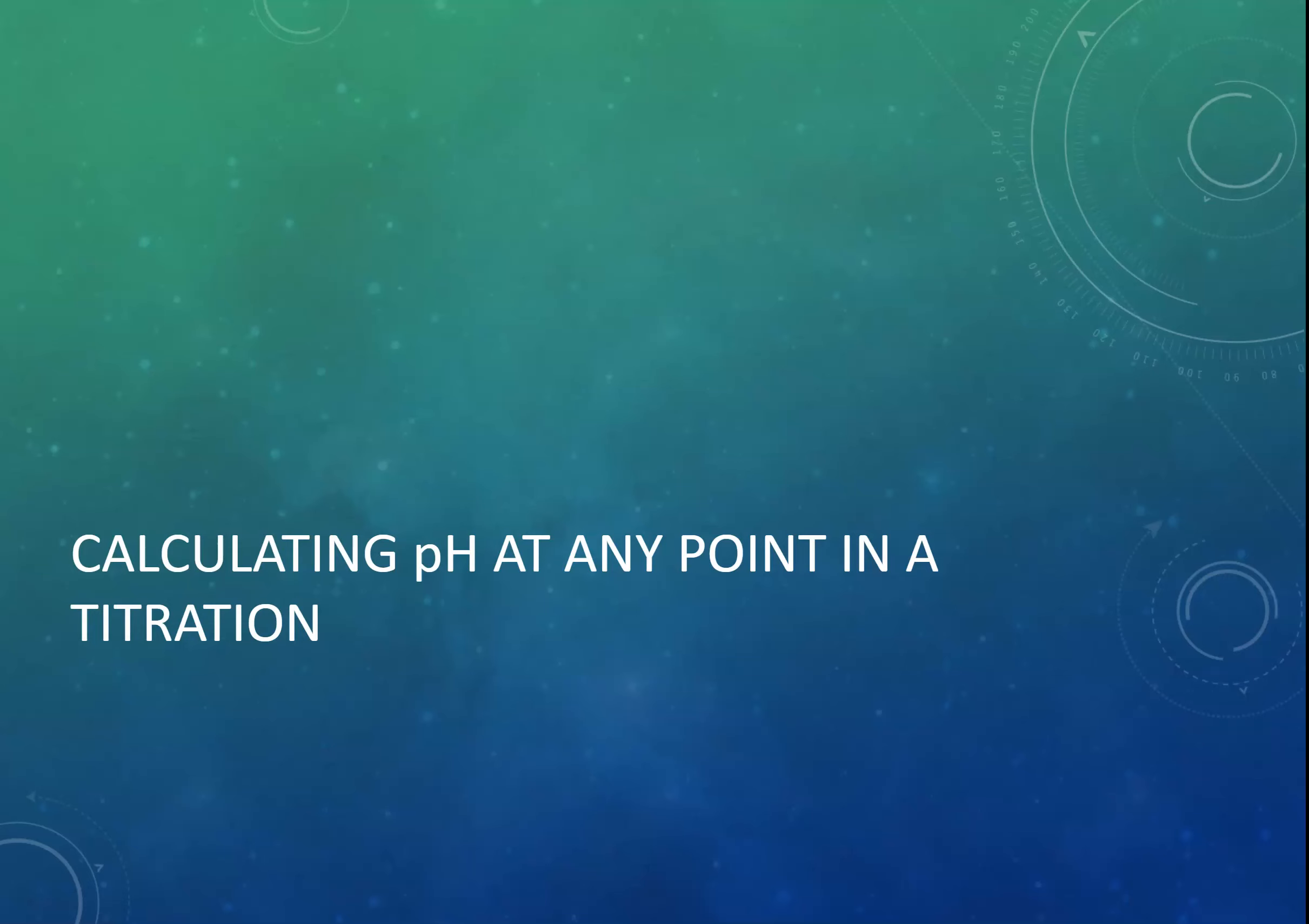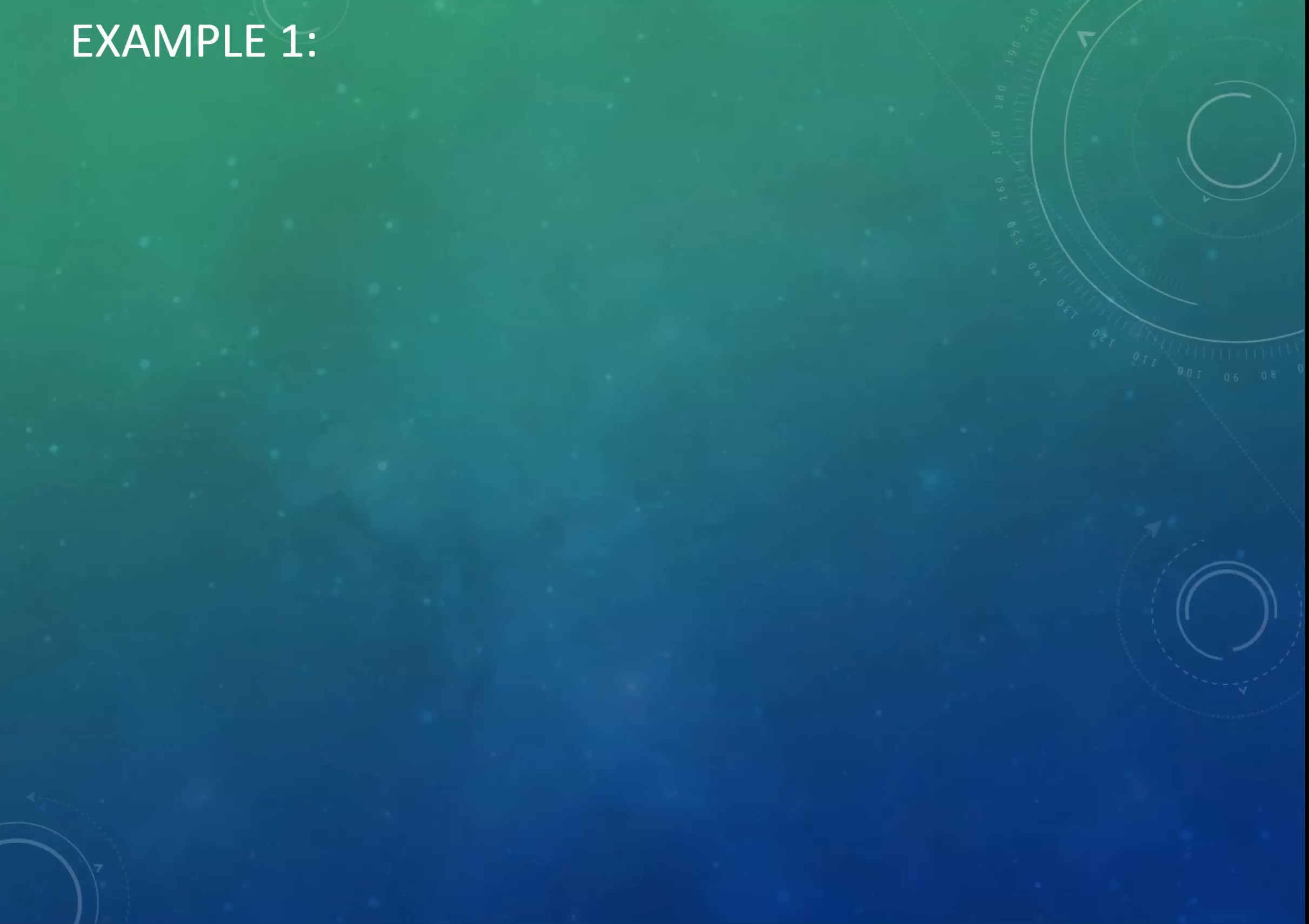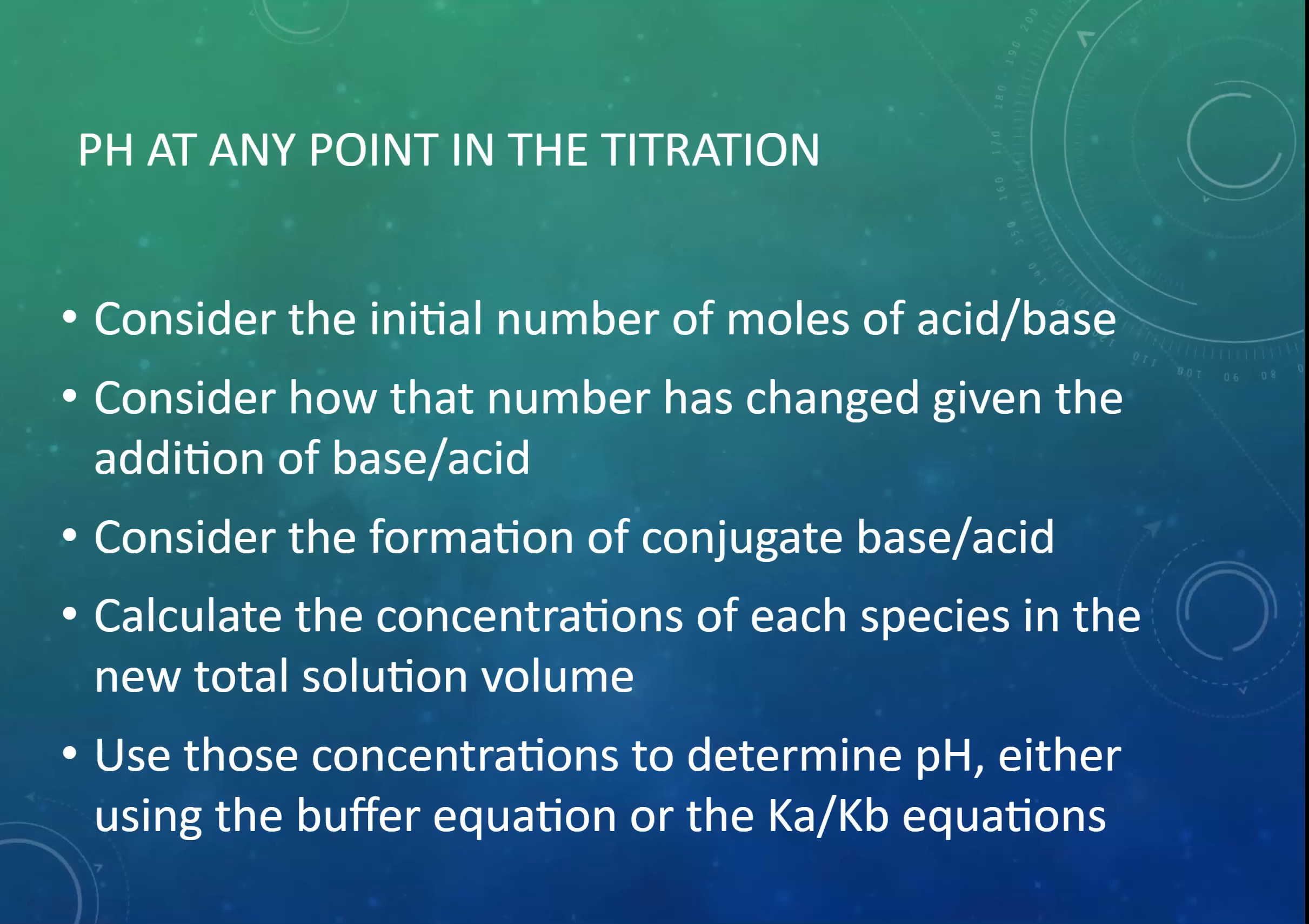In my previous video, we looked at how to calculate the initial and equivalence point pHs, and those are quite straightforward. In this case, we're going to look largely at the pH in the buffer region of the titration and the pH beyond the equivalence point. So, without further ado, let's think about the pH at any point in the titration.